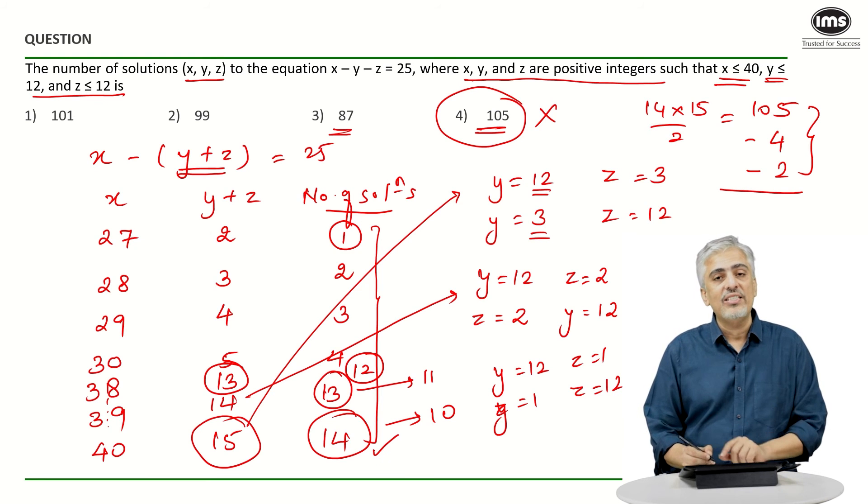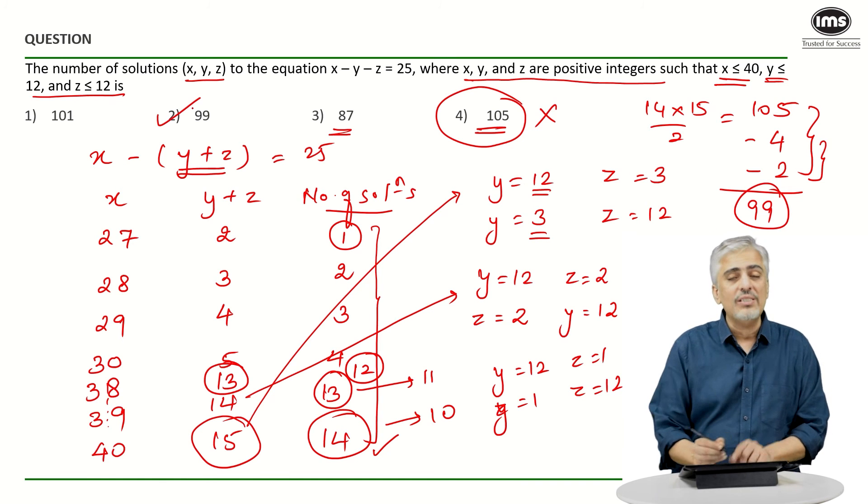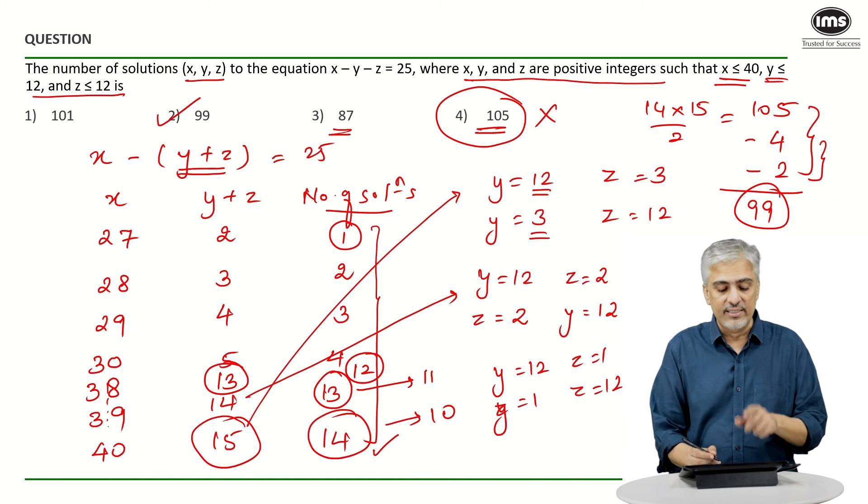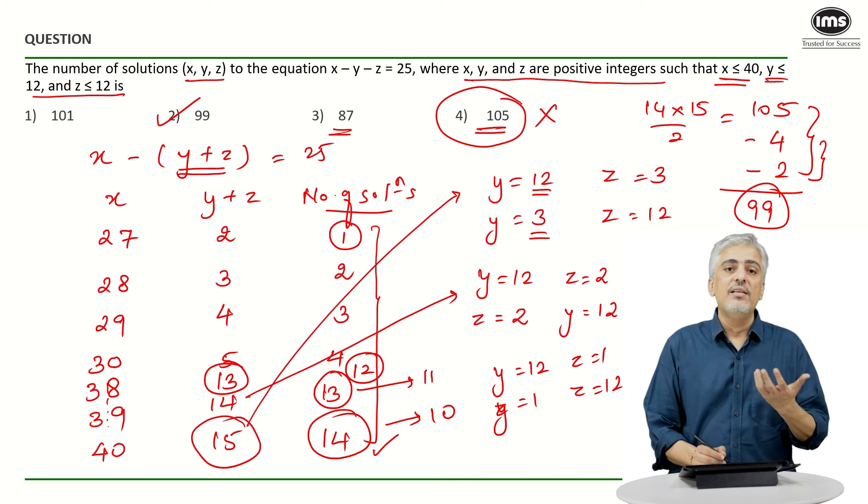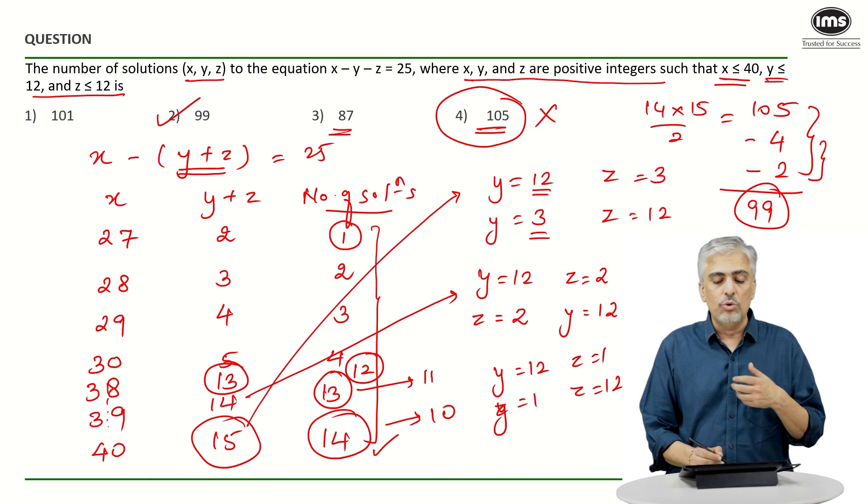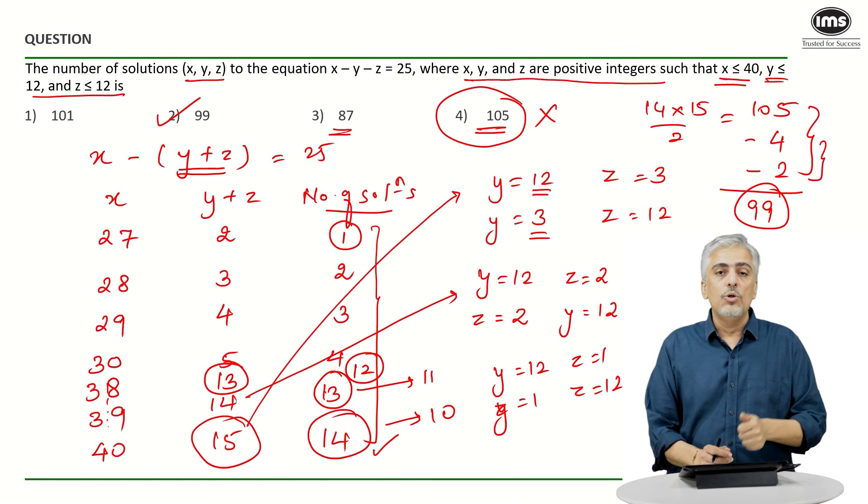So which means out of the 105 solutions, only 6 solutions are less. Answer is 99. Now this part was slightly tricky where I'm sure a lot of students made a mistake. They would have marked 105 as the answer. Please be very careful. The restrictions were very important - why less than or equal to 12 - to avoid that mistake. You could have also started from the largest value of x first, taken x as 40 and done that part manually. You would have realized you would not have made this mistake. Anyway, we have one more question for you towards the end of the video. Please solve that and give your answer in the comment box. Thank you and wait for the next video.